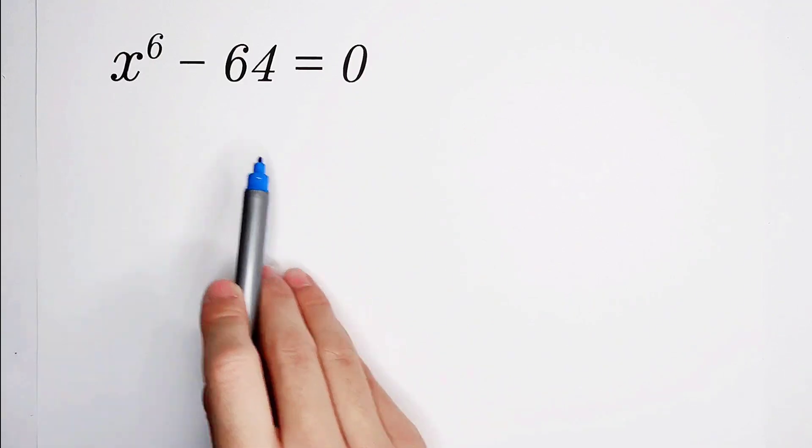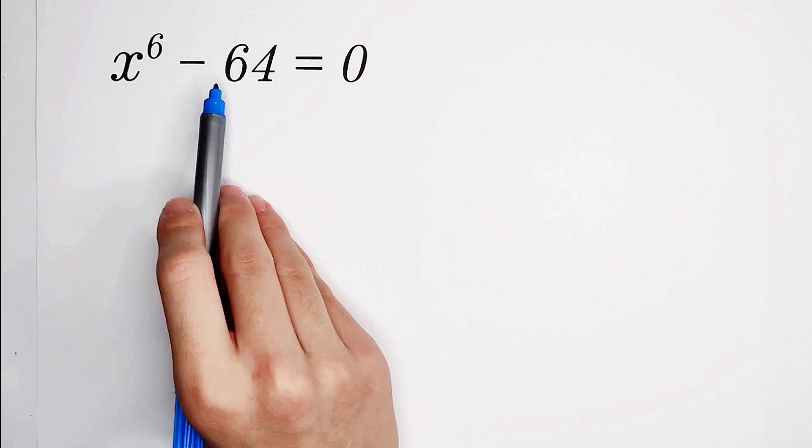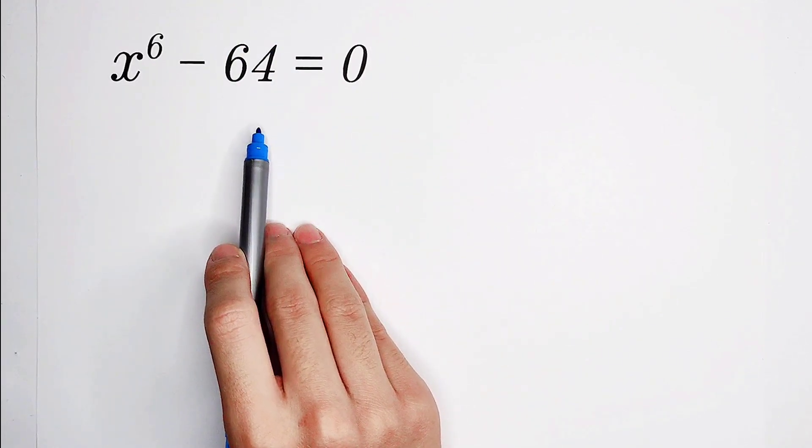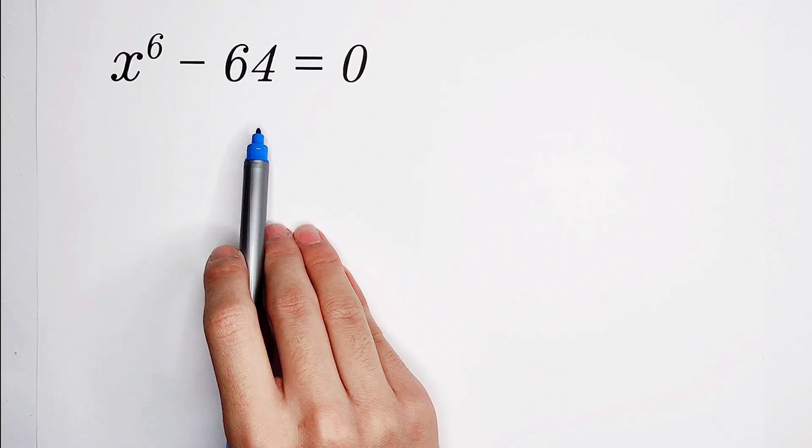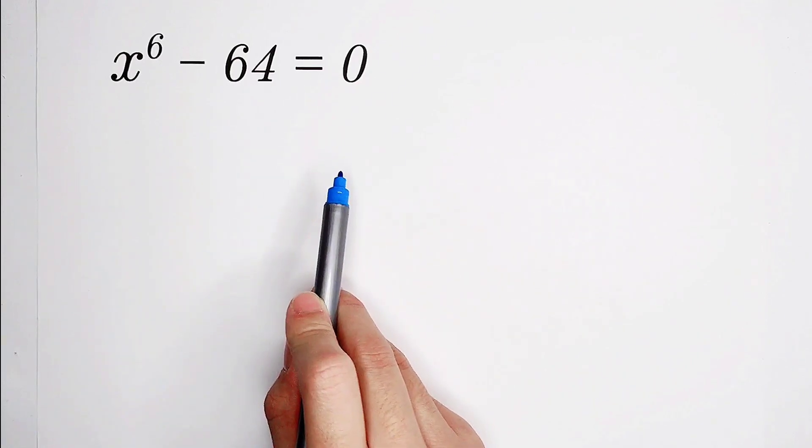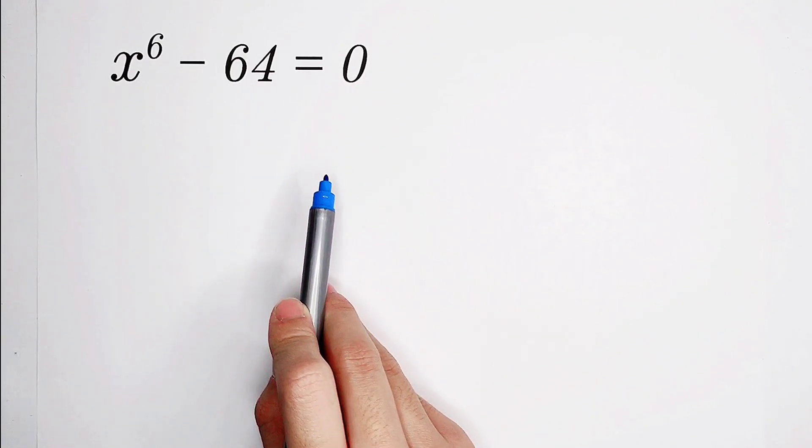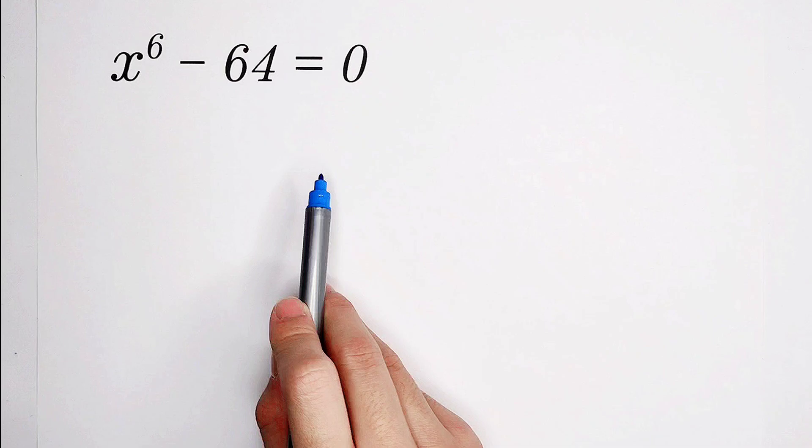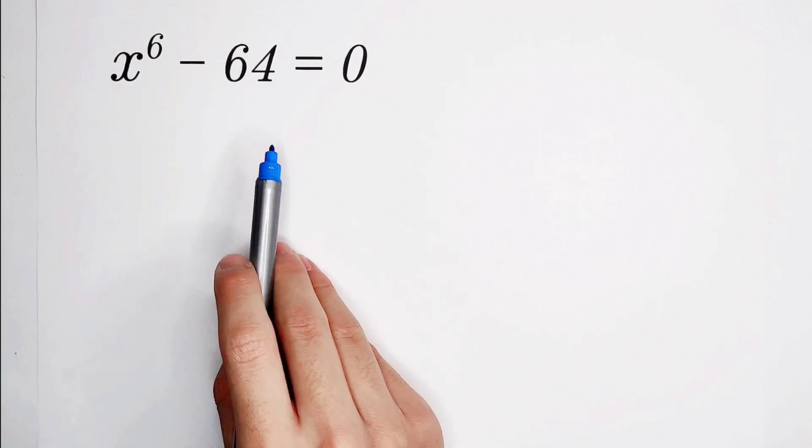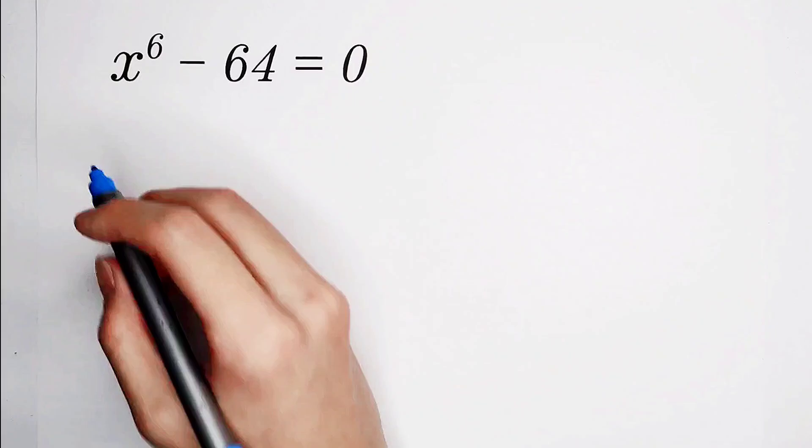However, there is a secret in this number. 64 is 4 times 4 times 4, it is 4 cubed. So it is 2 to the power of 6. That means 64 can be written as 2 to the power of 6.